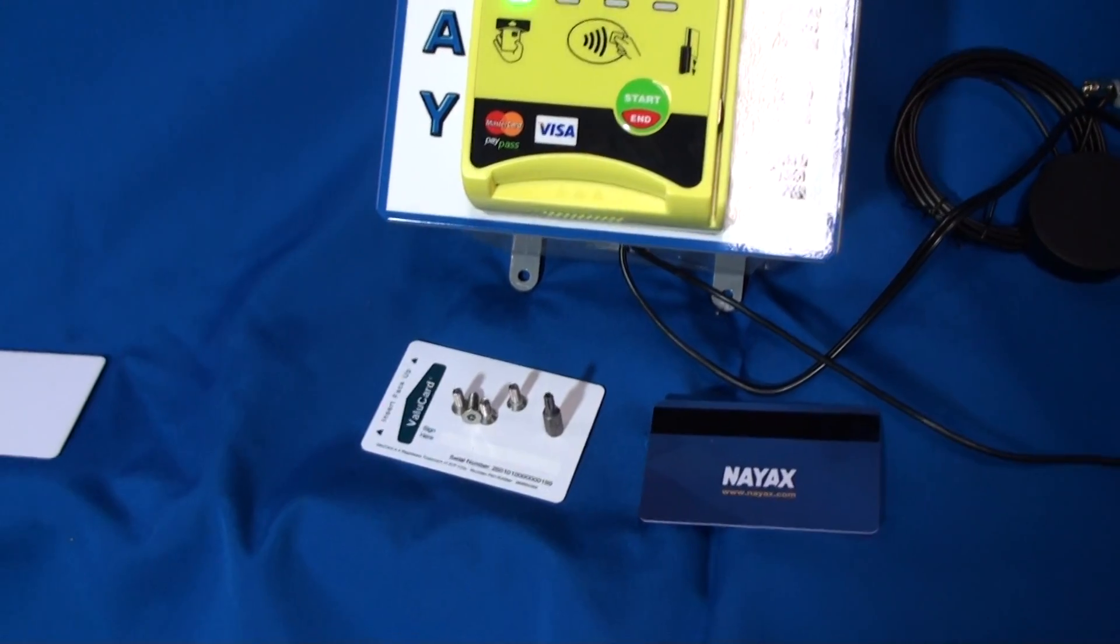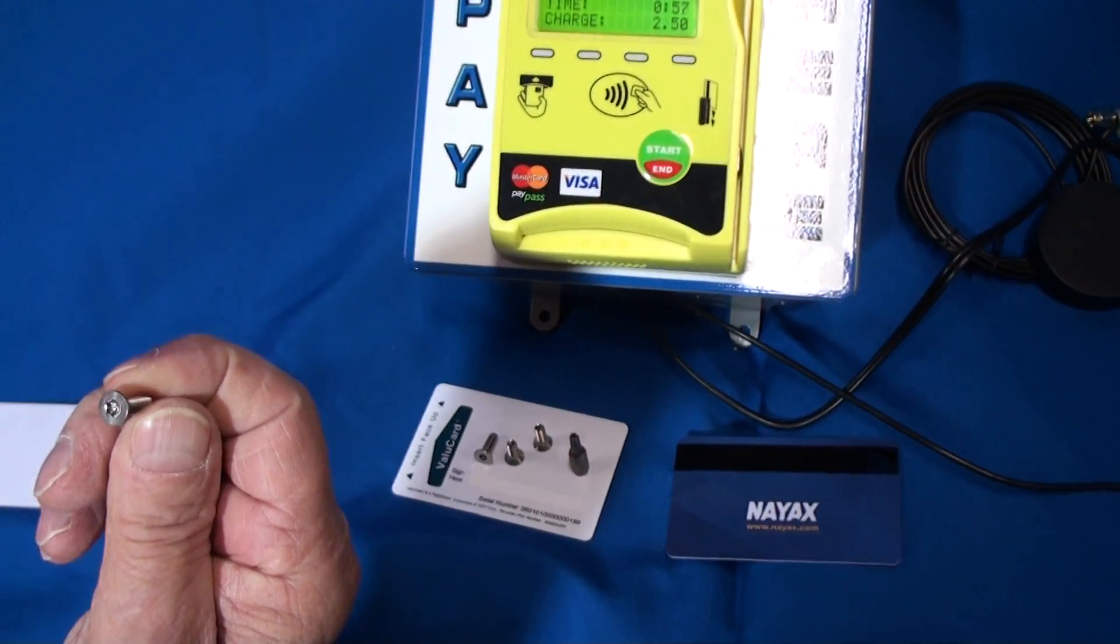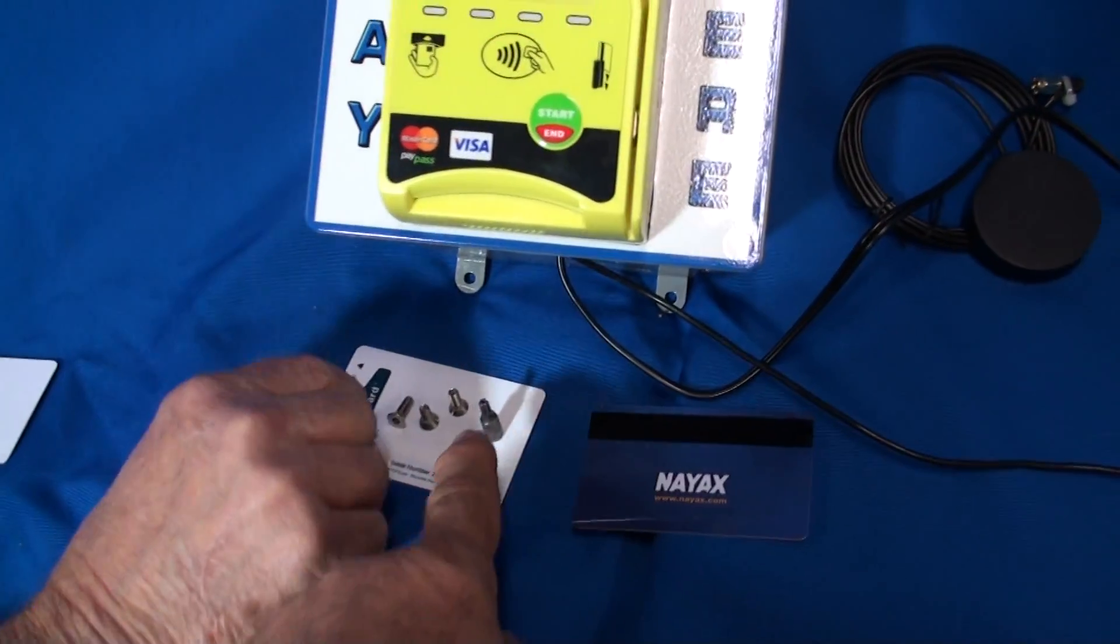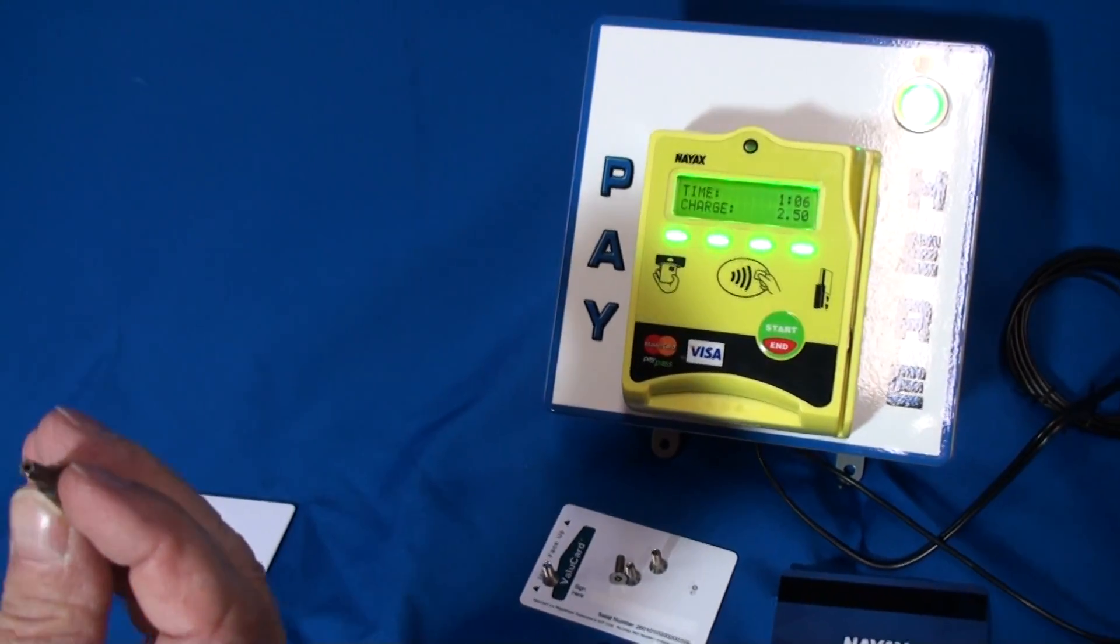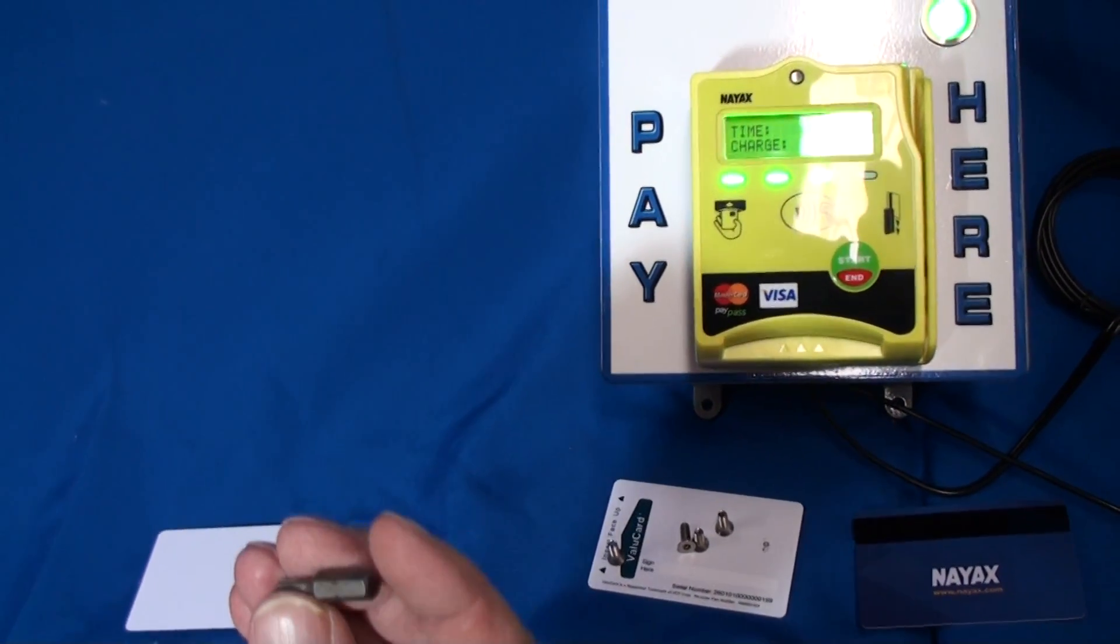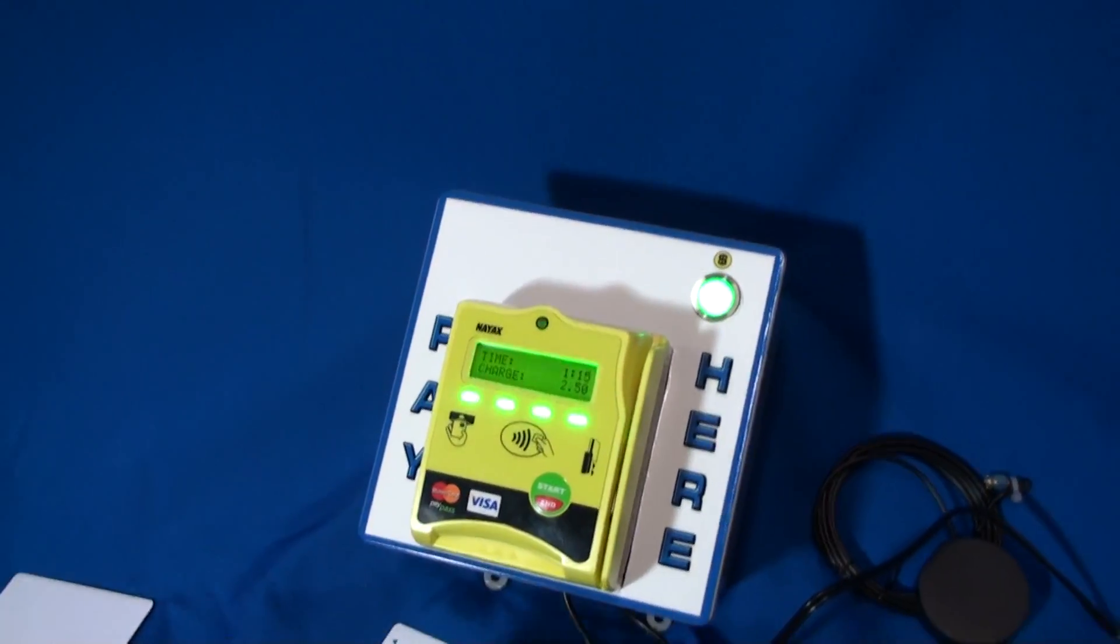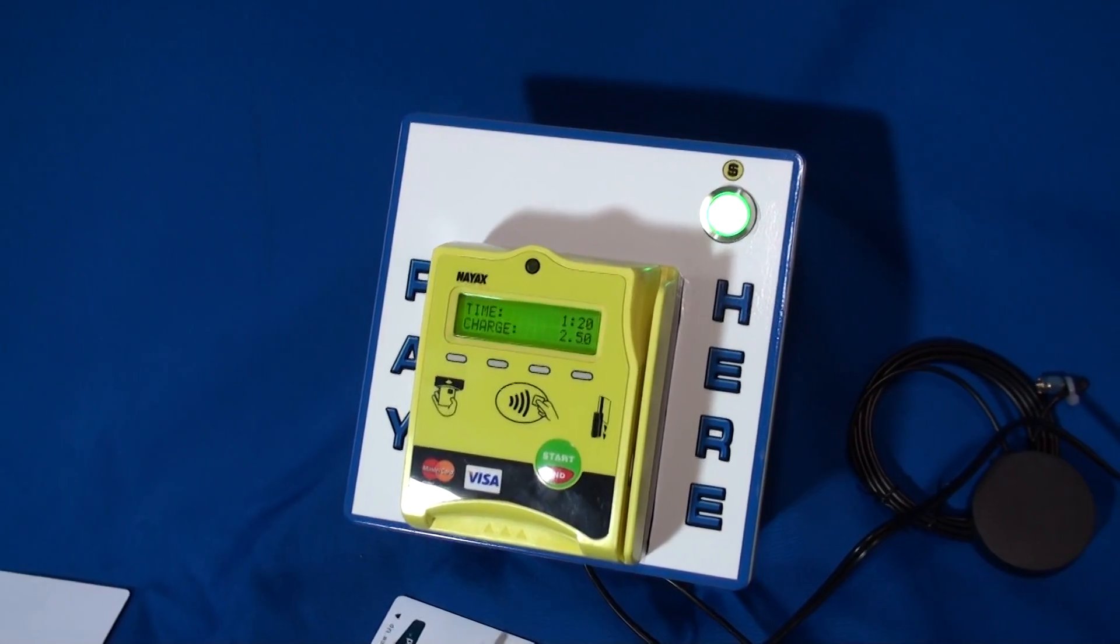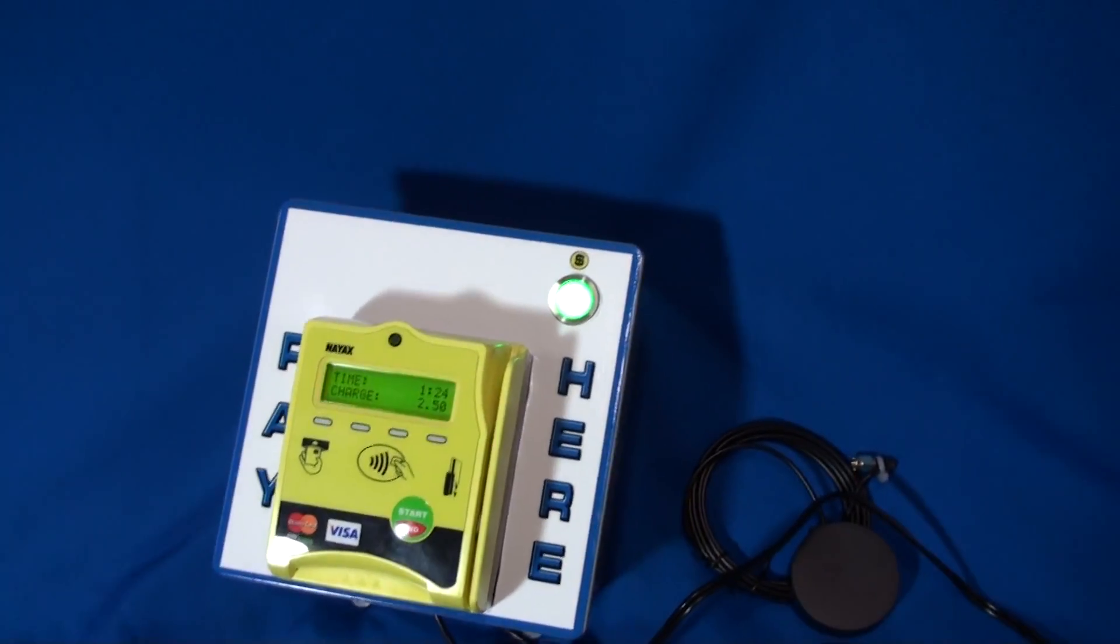They're Torx anti-tamper. Torx anti-tamper utilizes a special tool to remove it. You will have to order that little tool to open and close your enclosure. It's a T20 anti-tamper Torx model, T20 anti-tamper, size T20. Next, we're going to open up the box to show you what's inside.